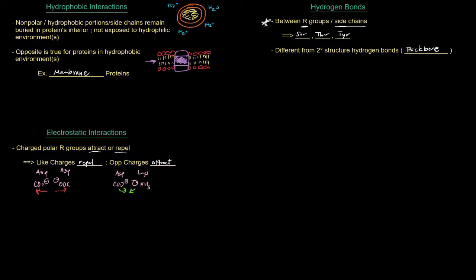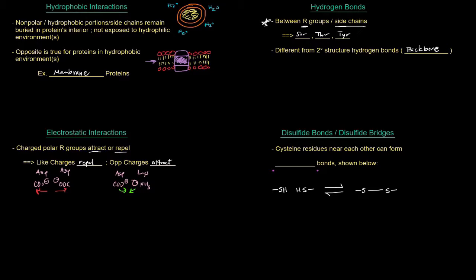There's a cumulative effect across the entirety of the protein when it comes to electrostatic interactions holding the entire structure together. Again, we're talking about the side chains specifically. Next up: disulfide bonds, or disulfide bridges. Cysteine residues near each other can form covalent disulfide bonds. If you have two cysteines next to each other, they have these thiol groups — SH groups — and they can come together and form a covalent bond between them. That is the disulfide bond or disulfide bridge.